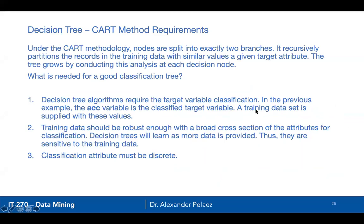We're going to start with the CART method. The nodes are split into exactly two branches. It recursively partitions the records in the training data with similar values — basically it's going to split all the data recursively.